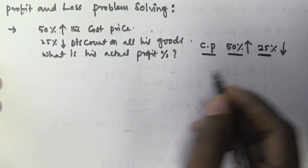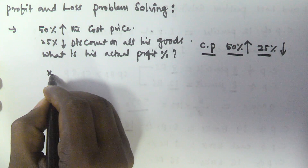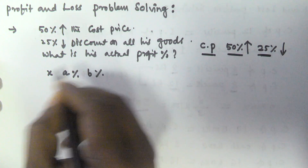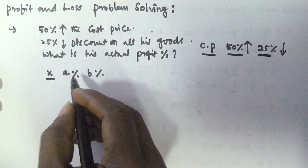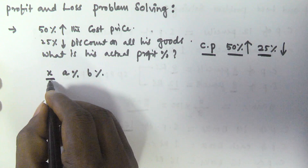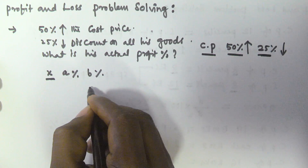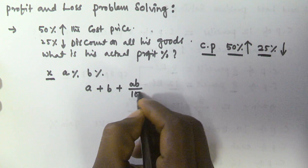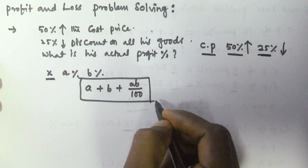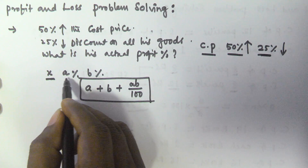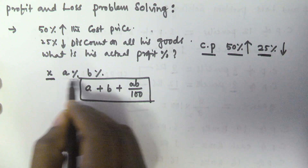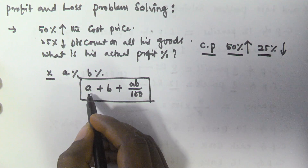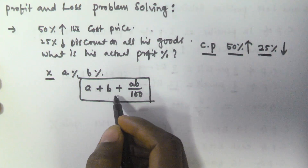In the percentage problems I told you: whenever there is a variable x and we are applying percentage a and percentage b successively on that variable, the overall percentage change in x is given by a + b + (ab / 100). So whenever we apply a percentage and b percentage successively, the overall percentage change is given by a + b + (ab / 100).